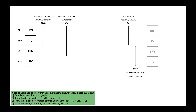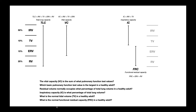First question: the vital capacity, or VC, is the sum of what pulmonary function test values? The NPTE likes these questions. The vital capacity is going to be the inspiratory reserve volume, IRV, plus the tidal volume, plus the ERV. Which basic pulmonary function test value is the largest in a healthy adult? If you know the percentages, you know the answer — it's the inspiratory reserve volume, which is 50%. Conversely, which is the smallest? That would be the tidal volume, at only 10%. Residual volume normally occupies what percentage of total lung volume? That's 25%.